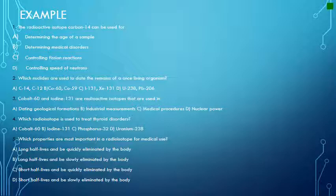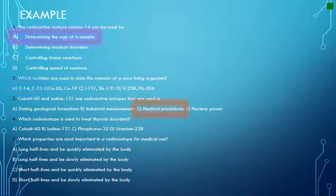Let's look at some example problems for the uses of radioisotopes. The radioactive isotope carbon-14 can be used for — answer A — determining the age of a sample. Which nuclides are used to date the remains of a once-living organism? Answer A: C-14 and C-12. Cobalt-60 and iodine-131 are used in — answer C — medical procedures. Which radioisotope is used to treat thyroid disorders? Answer B: iodine-131. Which properties are most important in a radioisotope for medical use? Answer C: short half-lives and quickly eliminated by the body.